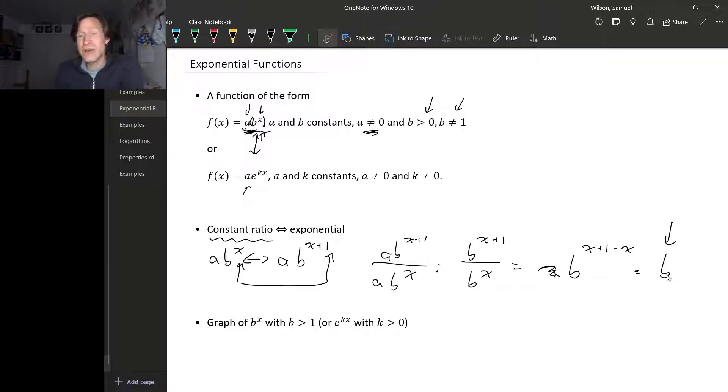This is very similar to how with a linear function, the difference of adjacent values always turns out to be constant. For a linear function, the difference of adjacent values is just the slope. So this b, this common ratio, is sort of the exponential version of the slope.